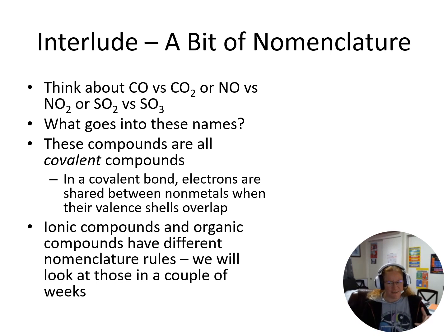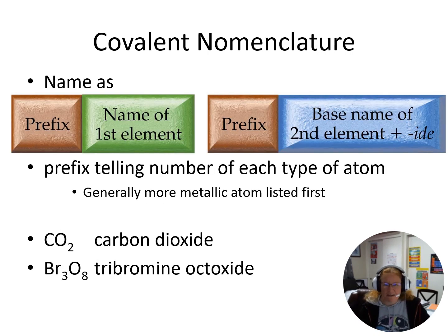For our covalent nomenclature, what we're looking at is this general structure here. So we have: a prefix, the name of the first element, a prefix, and then the base name of the second element, and then we change the ending to '-ide'.